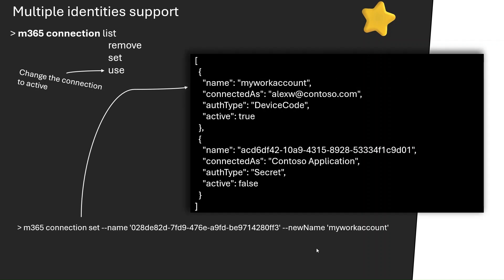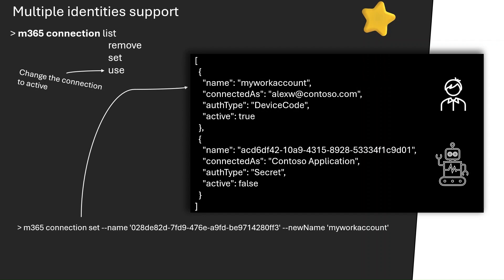You can also change the default GUID names created when you log in — by default the name is some auto-generated GUID. You can give it a friendly name using the M365 connection set command, and then when you use the connection use command to switch the connection, you can switch by providing the friendly name you gave to that connection. This is an awesome feature if you're managing multiple tenants or want to manage your Microsoft 365 tenant in different ways — for example, one time as a user with admin rights, and another time as an app to test your automated script before it runs.